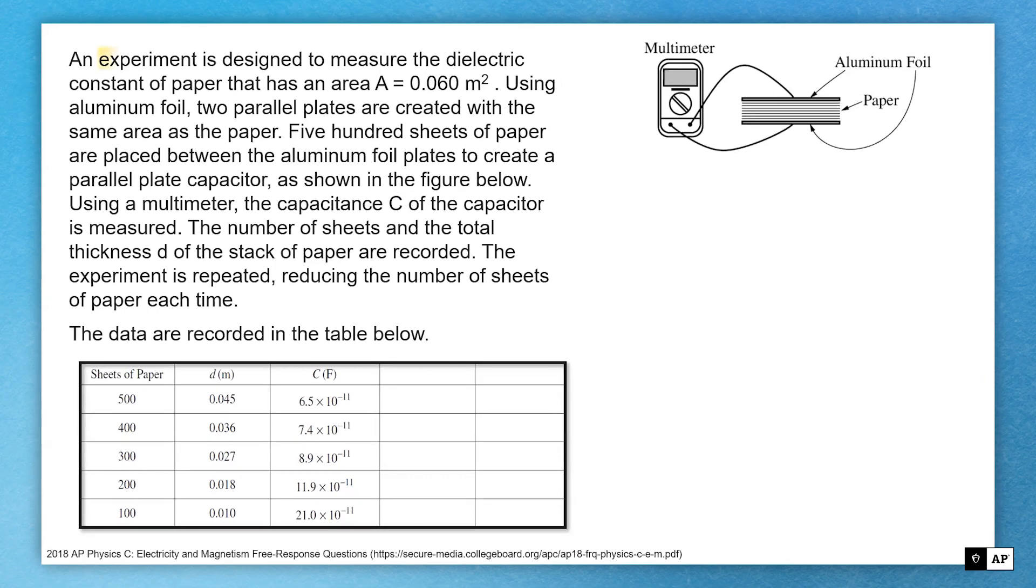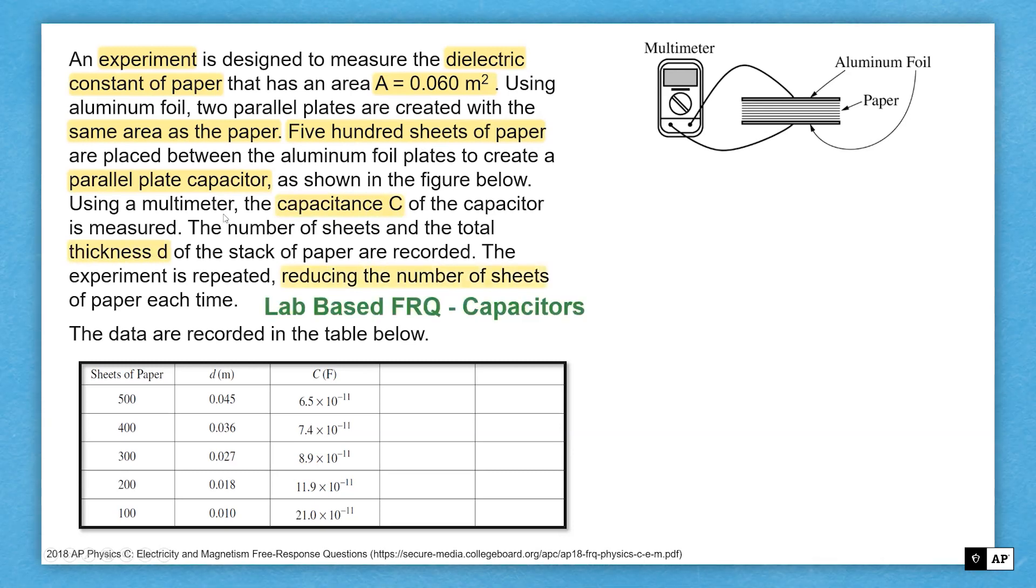Here we have this experiment. That's how we know this is an experimental design question. We also see this little grid down below. Reading through, there's some paper with a given area, same area, 500 sheets. We're having a parallel plate capacitor. This is a lab-based FRQ about capacitors.